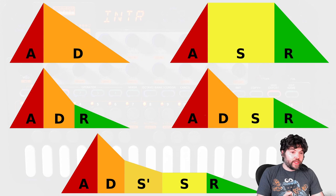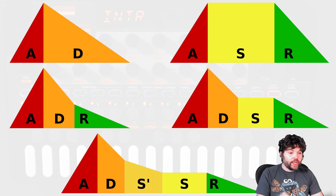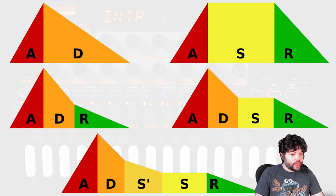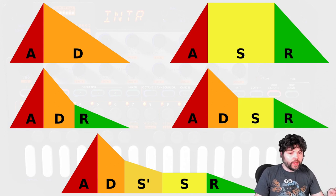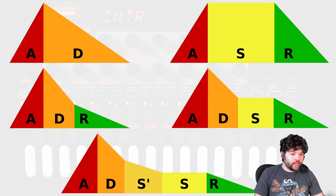The next type is an ASR envelope. An ASR envelope will attack to full amplitude, maintain or sustain that level while the key is held down, and as soon as the key is released, it will drop back down to zero. Notice that it's missing the decay phase you might be familiar with from other envelopes.